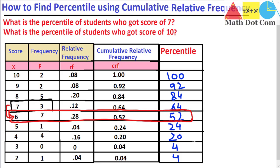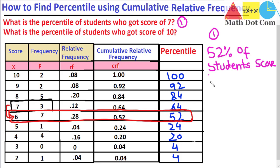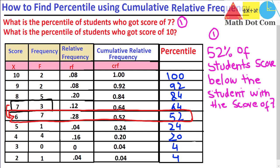It means the percentile is 52 percent. This is the answer to question number 1: 52 percent of students scored below the students with the score of 7. So the students who got the score of 7 can say that they were better than 52 percent of the class.